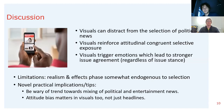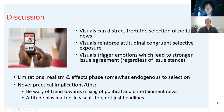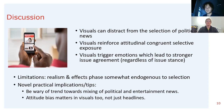What does this mean? Starting with the summary takeaways: first, visuals can act as distractors from political news — when placed on entertainment news items in today's high-choice news environment, they can draw attention away from political news. Second, visuals can reinforce attitude-congruent selective exposure; they don't necessarily encourage cross-cutting exposure, and the addition of certain images can lead to selection into attitude echo chambers. Third, visuals trigger emotions which lead to stronger issue agreement, regardless of issue stance.